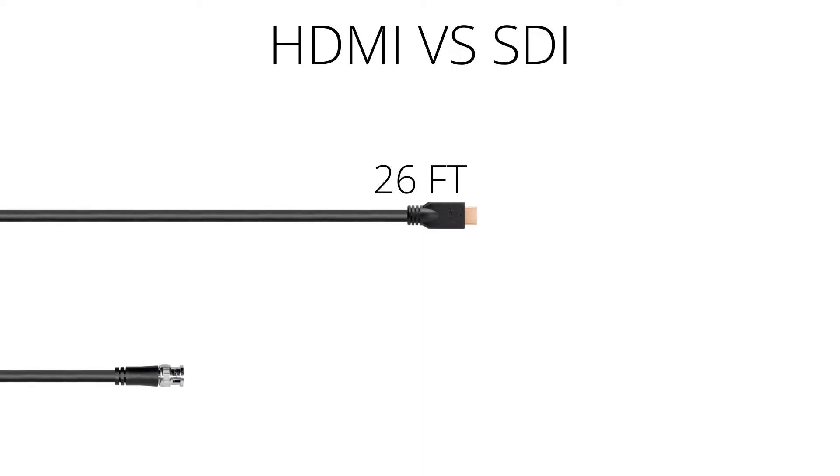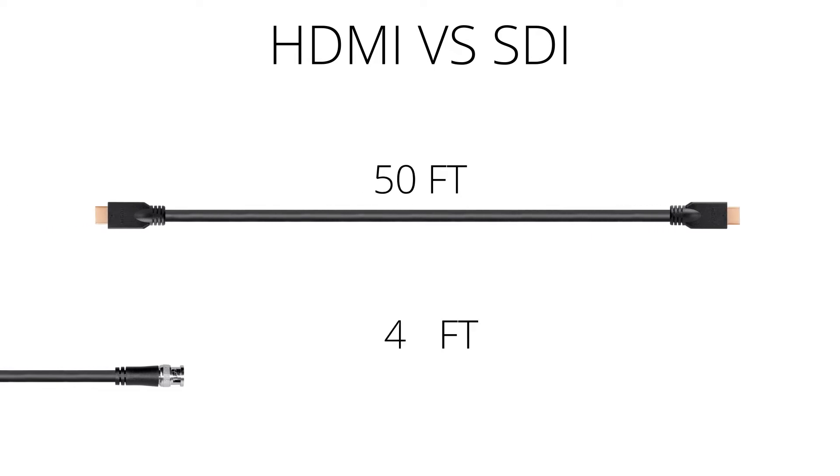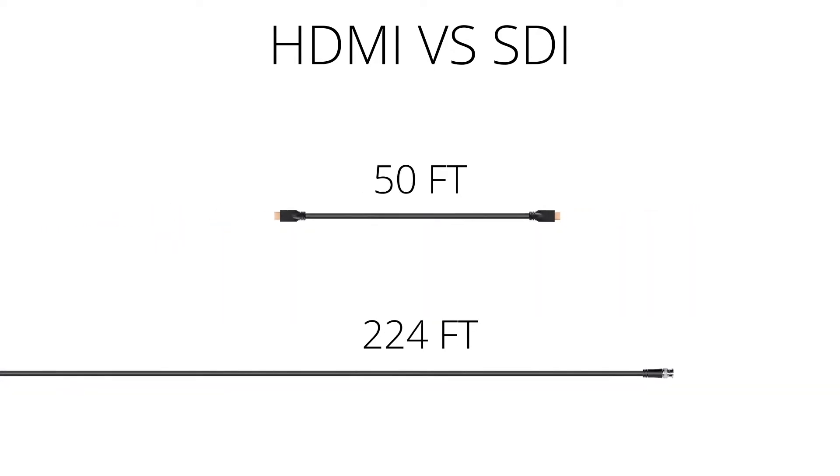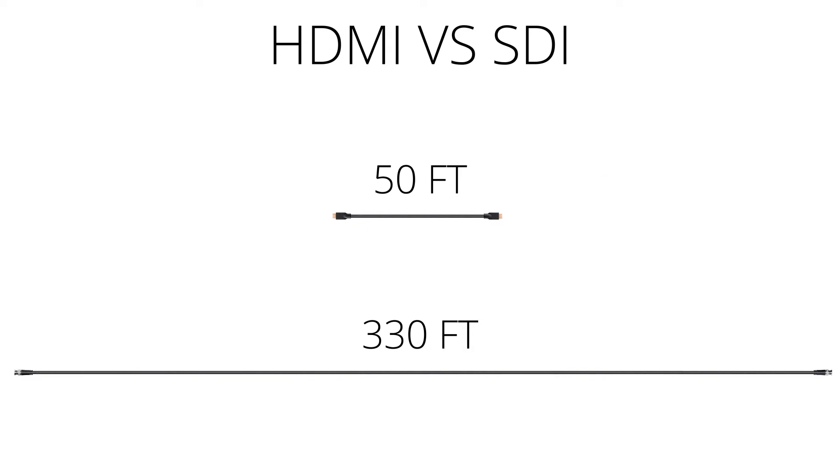But aside from finding use in pretty much any production setting where you need to distribute out to multiple locations, what makes a distributor like this an important piece of equipment is that it helps overcome a major limitation of HDMI. While HDMI can only run about 15 meters or about 50 feet, SDI coaxial can run more than six times that at a distance of about 100 meters or 330 feet. That makes the EZ Distributor valuable in a conference setting, a house of worship, a concert hall, or pretty much any large venue where you need to send your video signal long distances.